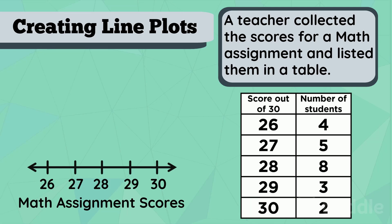Now for the fun part. Let's draw dots above each number. From the table, it says that four students scored 26. So let's draw four dots above 26.